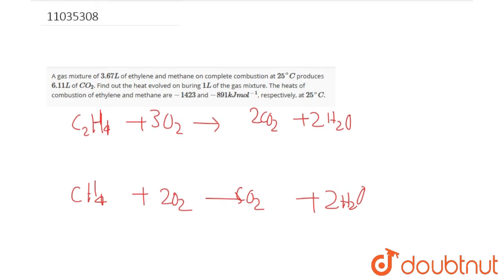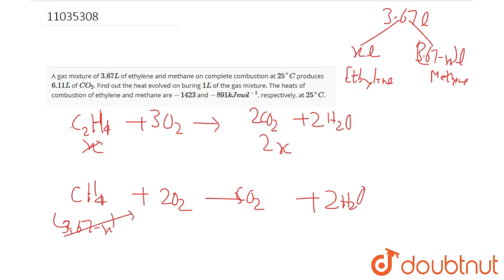The question states that 3.67 liters is a mixture of ethylene and methane. Let's assume ethylene is 2x and methane is 3.67 minus x.